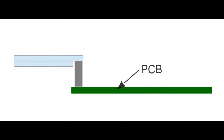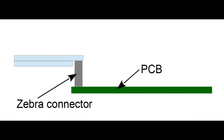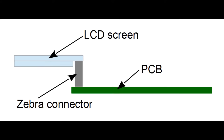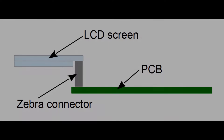Now if we look at how everything stacks up: we have the PCB board at the bottom, then the zebra connector, and then the LCD screen at the top. From knowing this you can now see how the PCB board is connected to the LCD screen using the zebra connector.